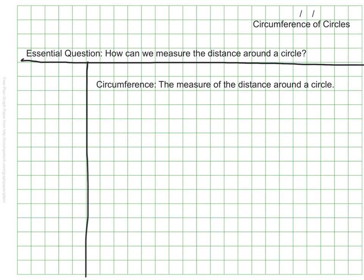To find the circumference, we need one of two pieces of information from our circle. We need either the diameter or the radius. The diameter is the distance across a circle. The diameter must go through the middle of a circle.